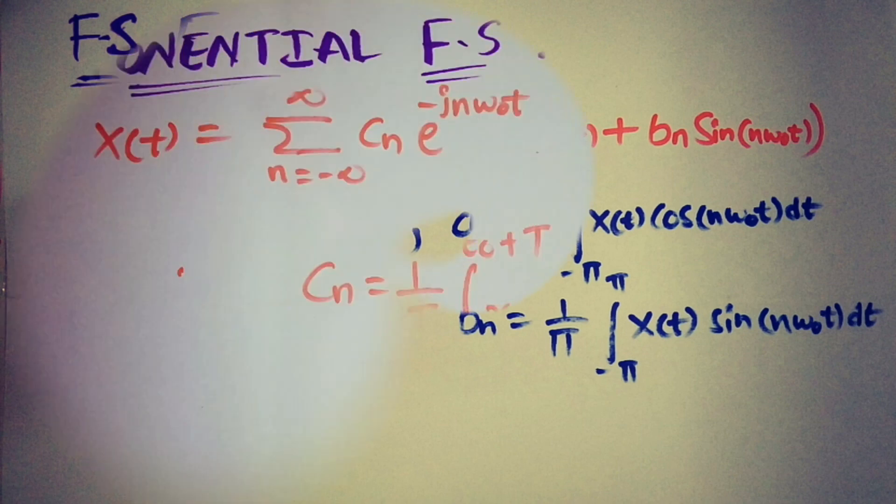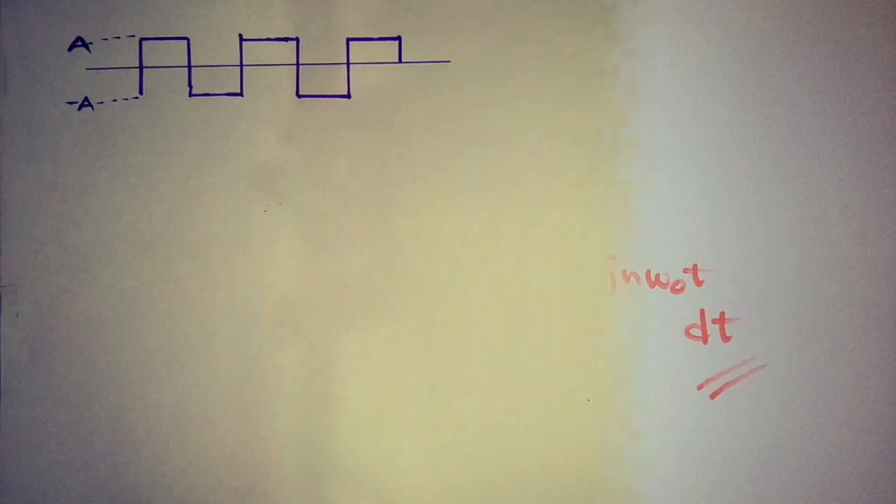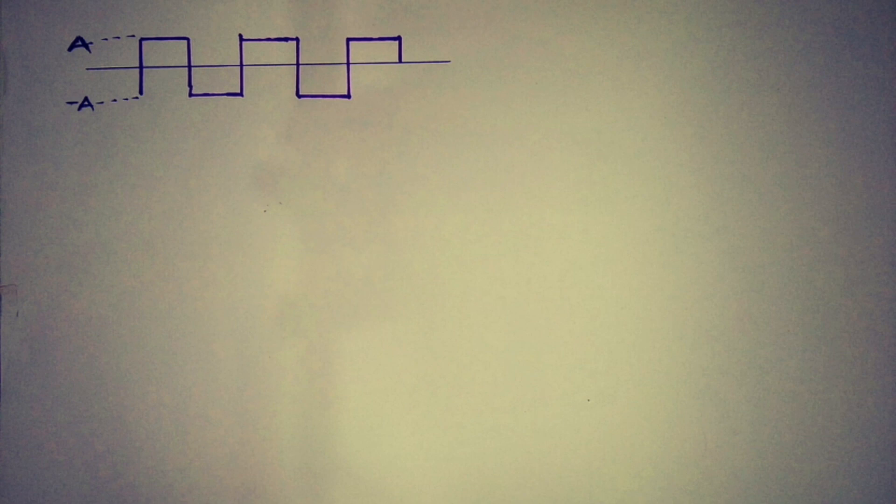The Fourier series is also given in complex exponential form, where the signal x of t is expressed in complex sinusoids. Here, cn represents the amplitude of nth harmonic signal.